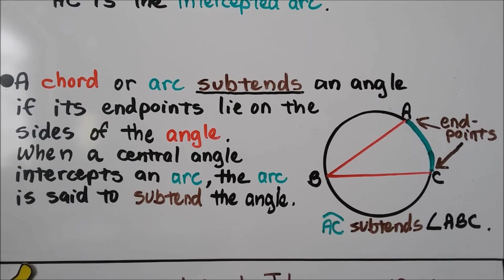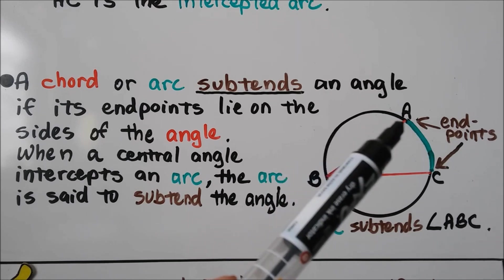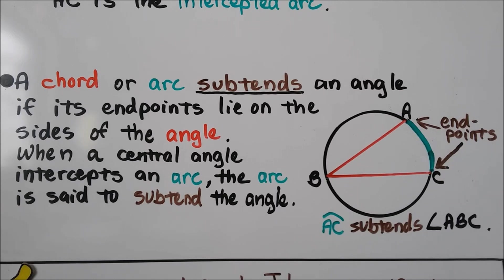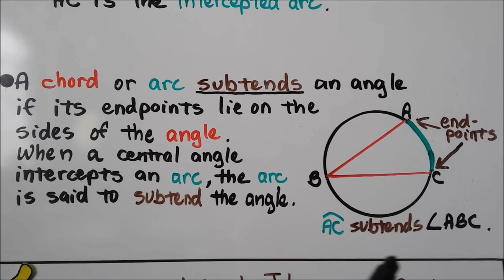A chord or arc subtends an angle if its endpoints lie on the sides of the angle. And when a central angle intercepts an arc, the arc is said to subtend the angle. So arc AC subtends angle ABC.